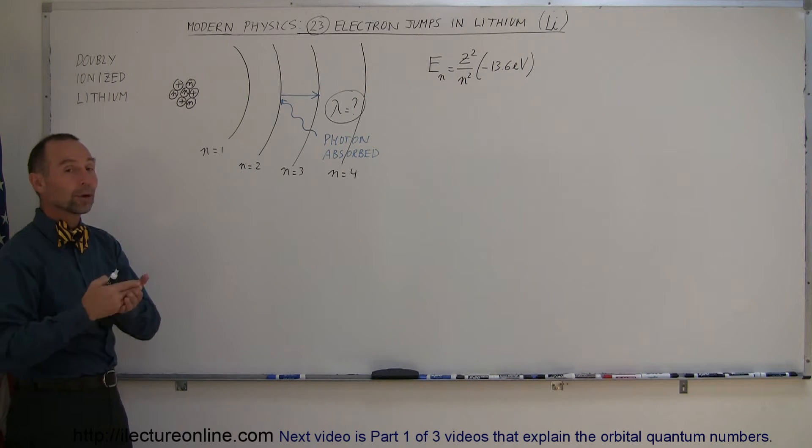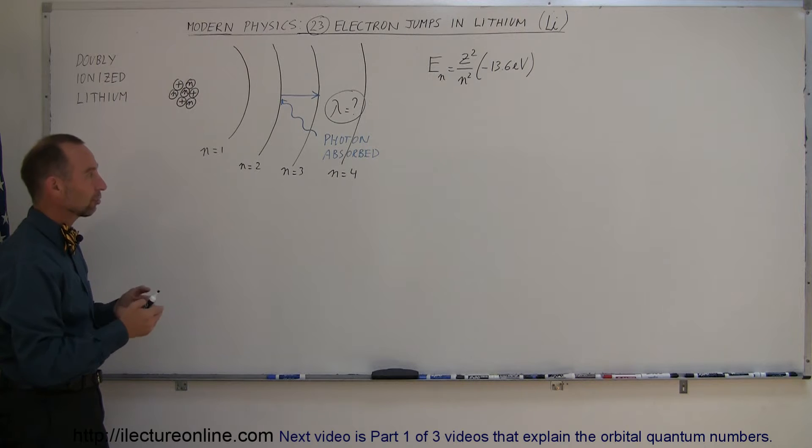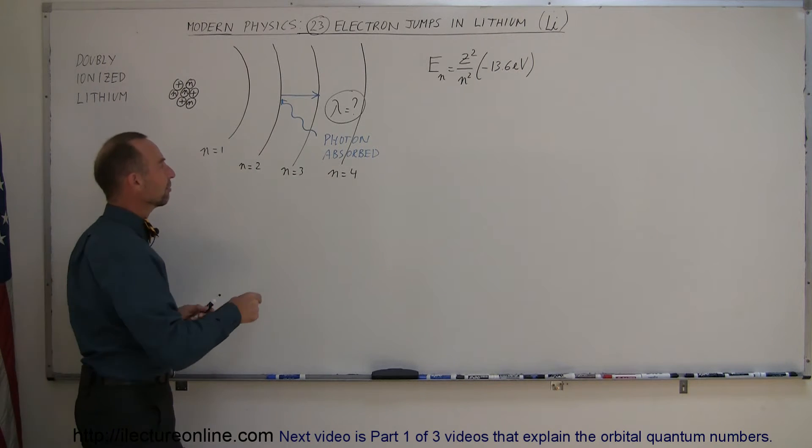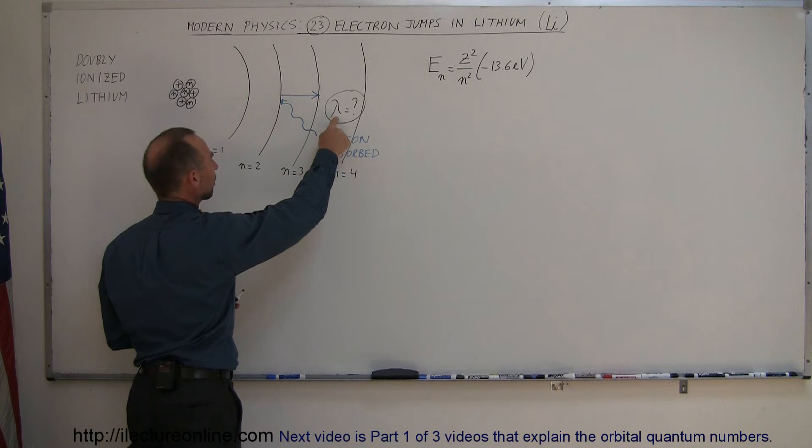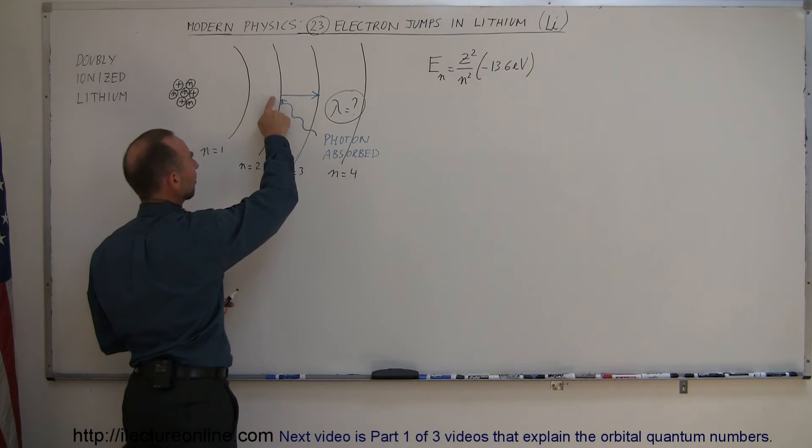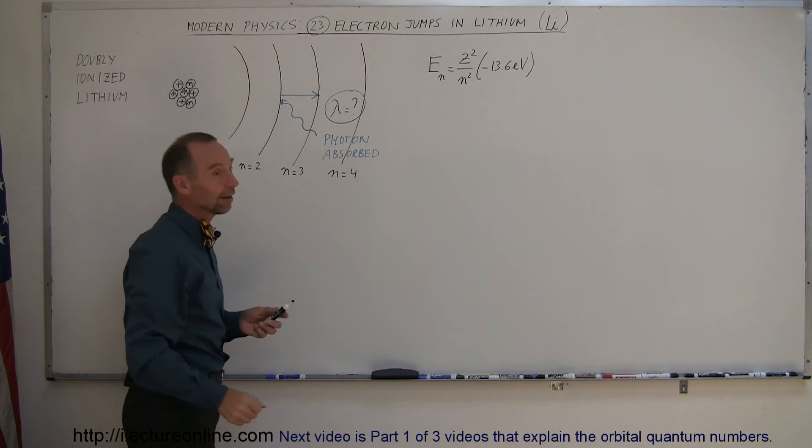they're either going to absorb or emit photons with specific wavelengths. On this exercise, we're trying to find the wavelength of the photon that will be absorbed in order for an electron to jump from the second level up to the third level.